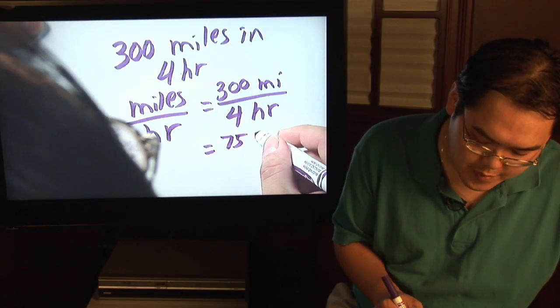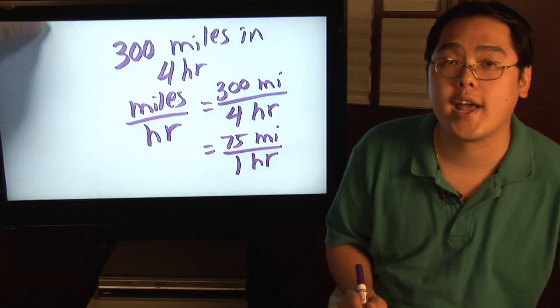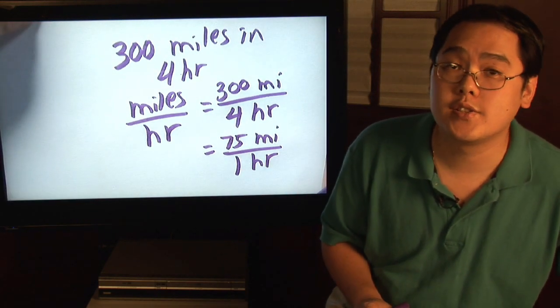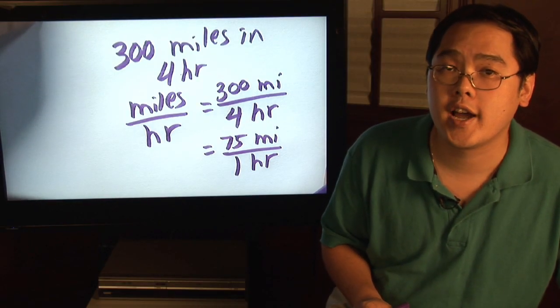So you have 75 miles in one hour. Now that means you average 75 miles per hour which is a pretty good cruising speed especially on the interstate highway.